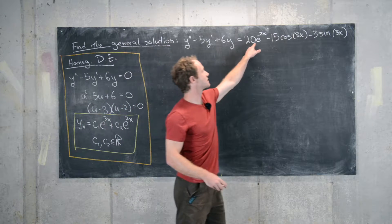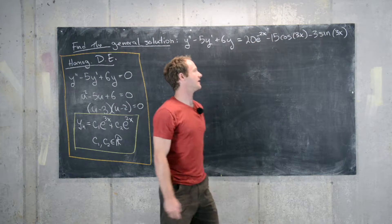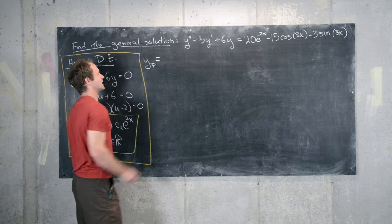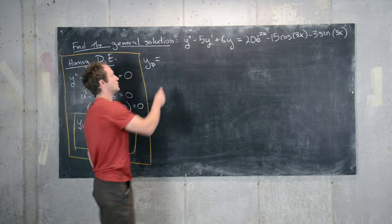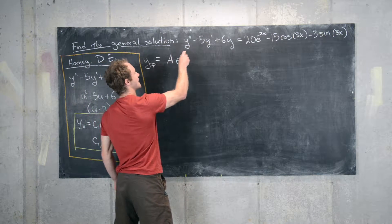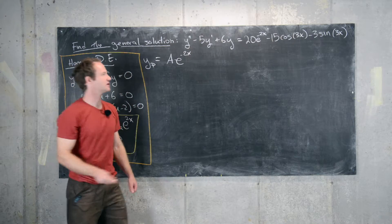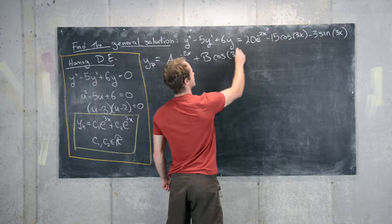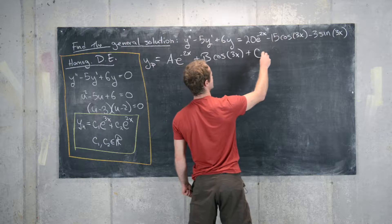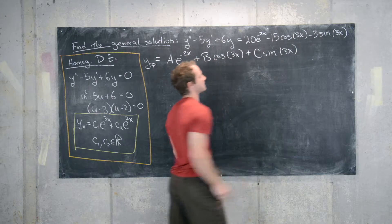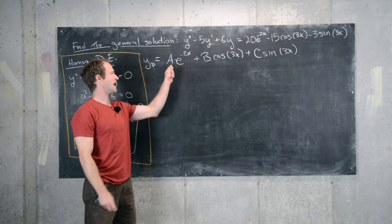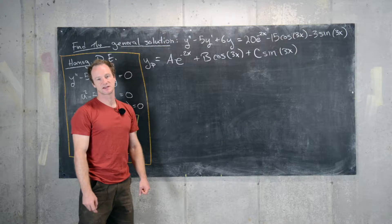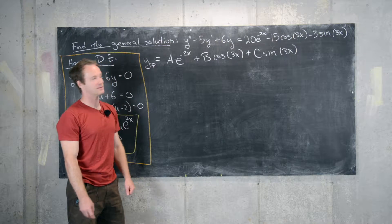Now we'll look at the particular solution. Given that the forcing function is built by an exponential part and then a part built out of sines and cosines, that gives us a good starting place for the particular solution — the same type of exponential function with an undetermined coefficient, plus an undetermined coefficient times cosine 3x, plus another undetermined coefficient times sine 3x. Our guess will be a e to the minus 2x plus b cosine 3x plus c sine 3x. Now we just have to determine a, b, and c.